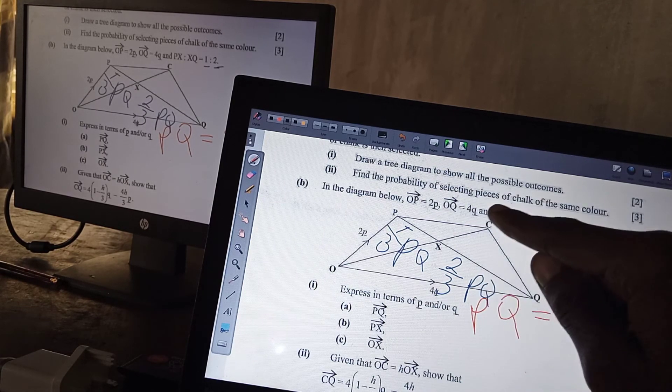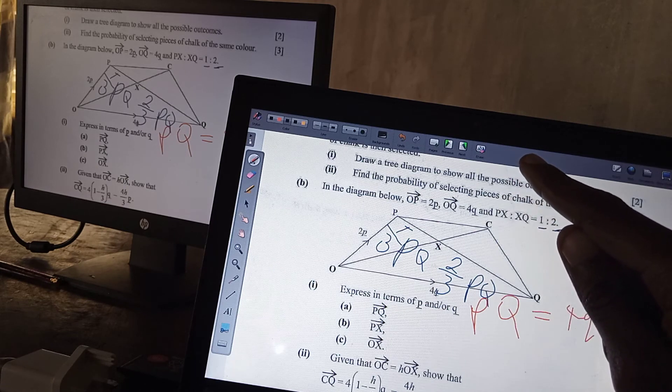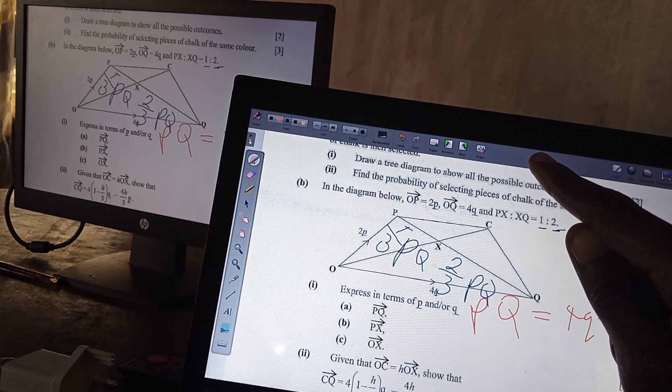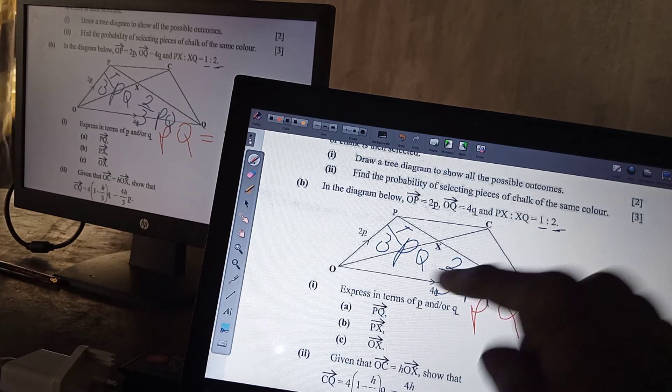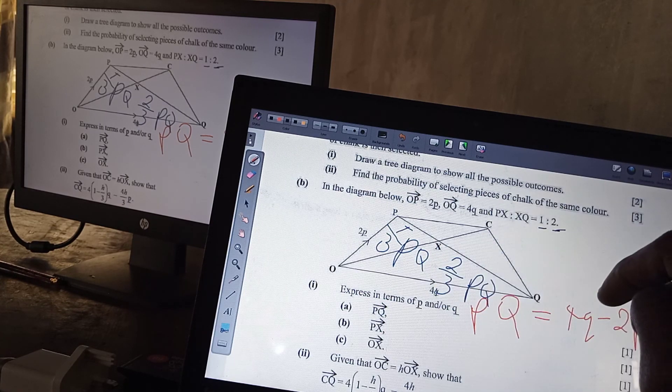Meaning that PX equals 1 over 3, 1 over 3 PQ. See that?